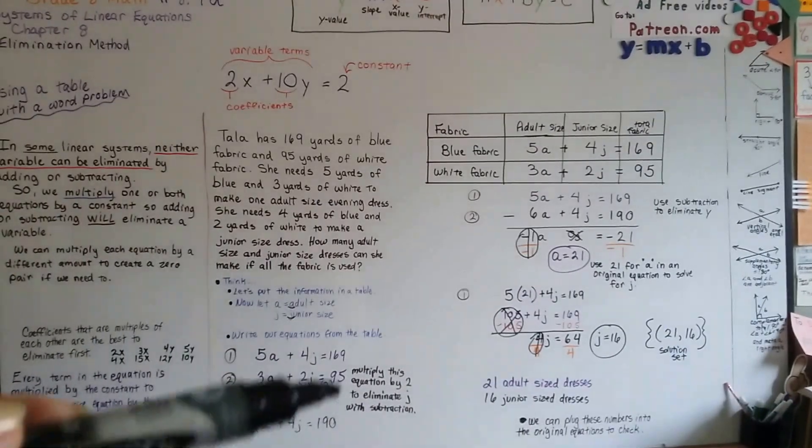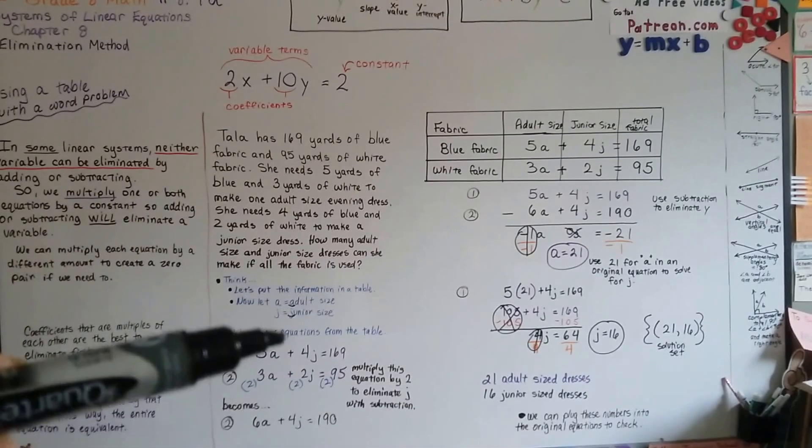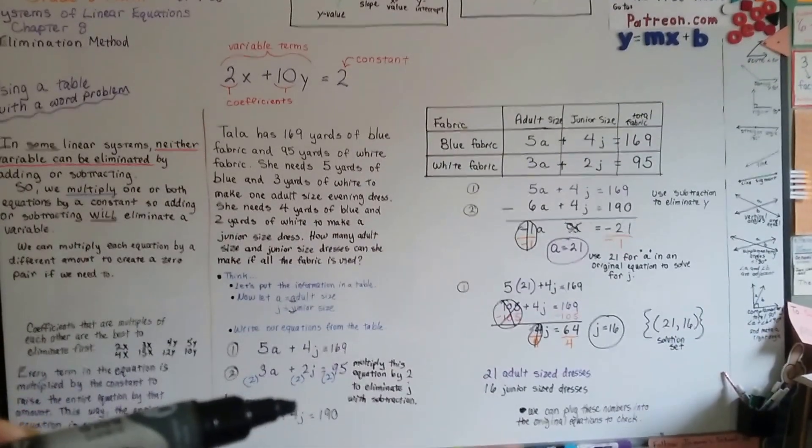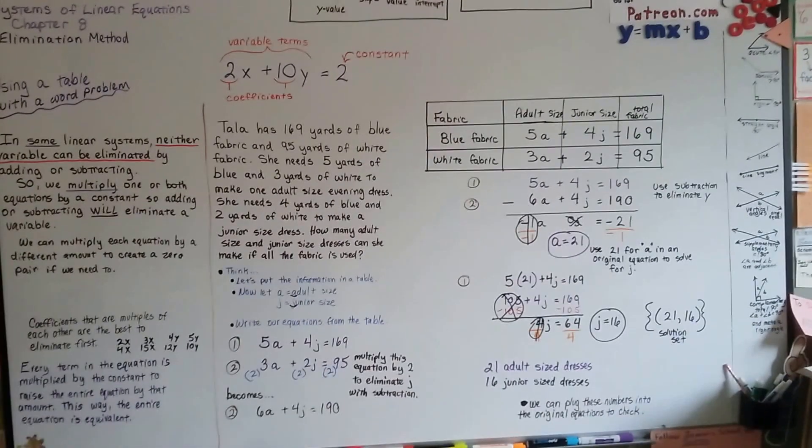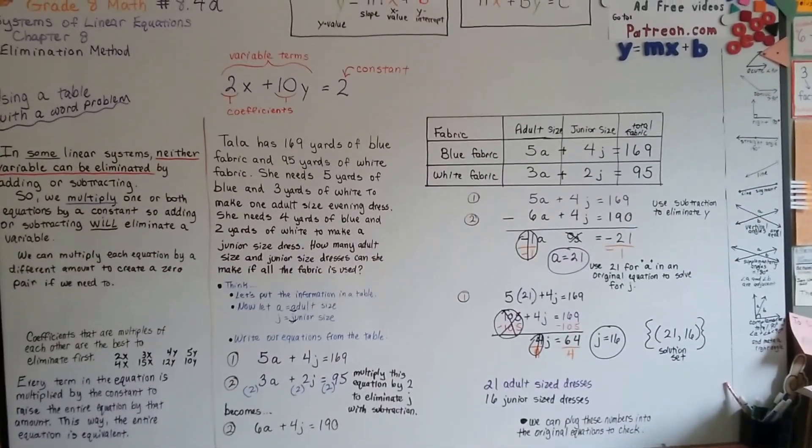And just remember that you can multiply one equation to raise it up to the other one. So one term can be eliminated. Or you can multiply both equations by a different number. Okay? Alright. We'll see you next video.